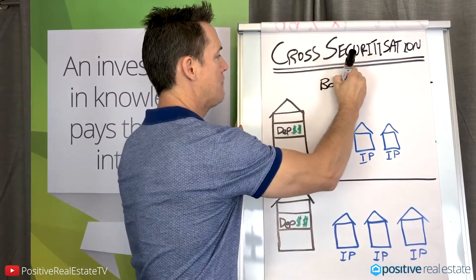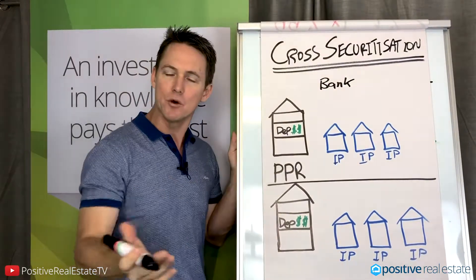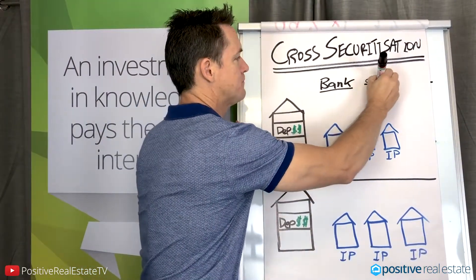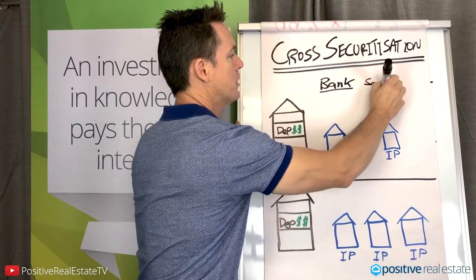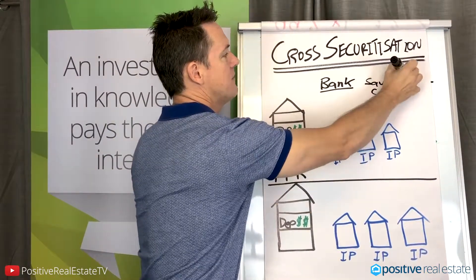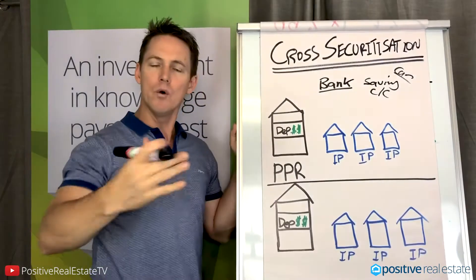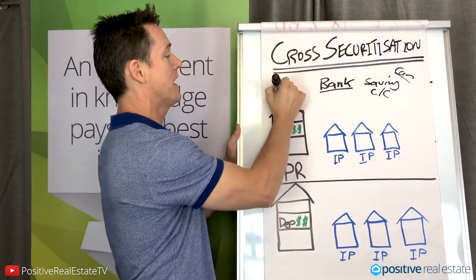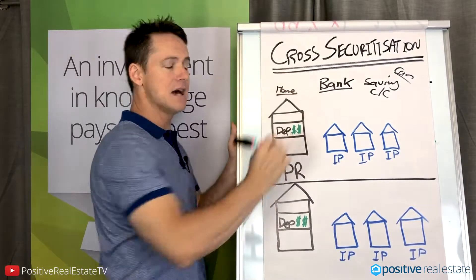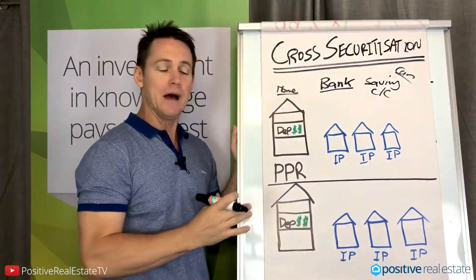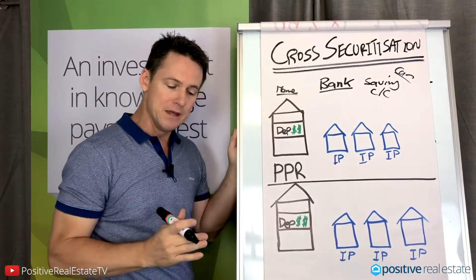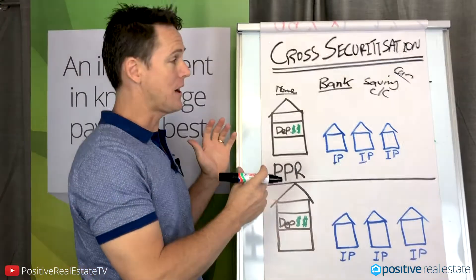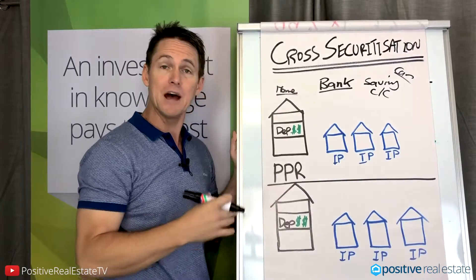They would go to one bank they've been with all of their lives because they have their savings account there. They've probably got a credit card there, maybe a car loan there. So they go to their bank and say, listen, they've got their home loan there too, and they say: I would like to buy an investment property. The bank says, sure, no problem. Let's have a look at your situation, and if you qualify, they'll lend you some money.